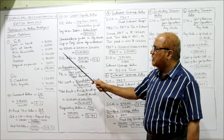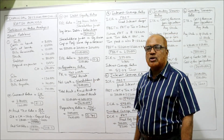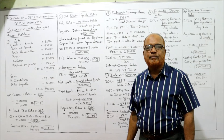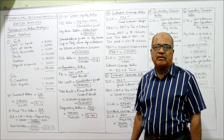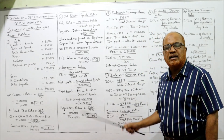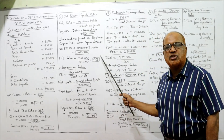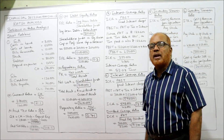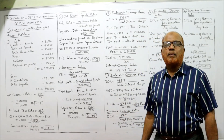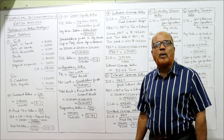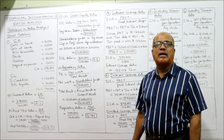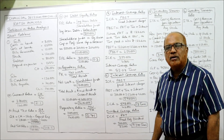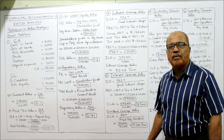So the debt equity ratio is 0.3, meaning the debt is 30% of shareholders fund. Now proprietary ratio: the formula is net worth divided by total assets.